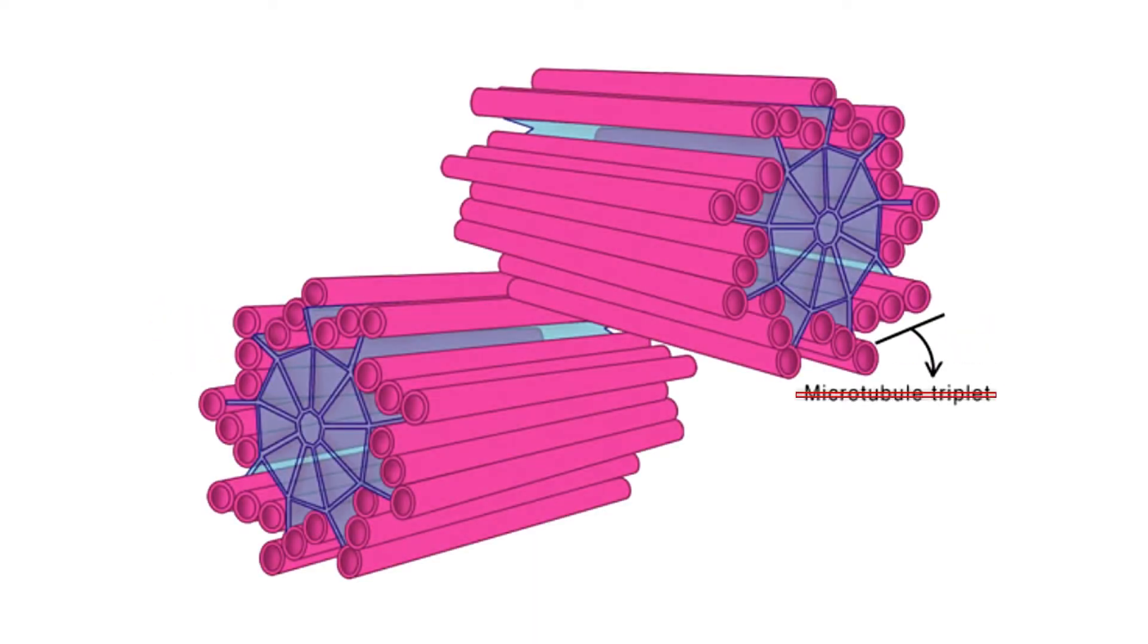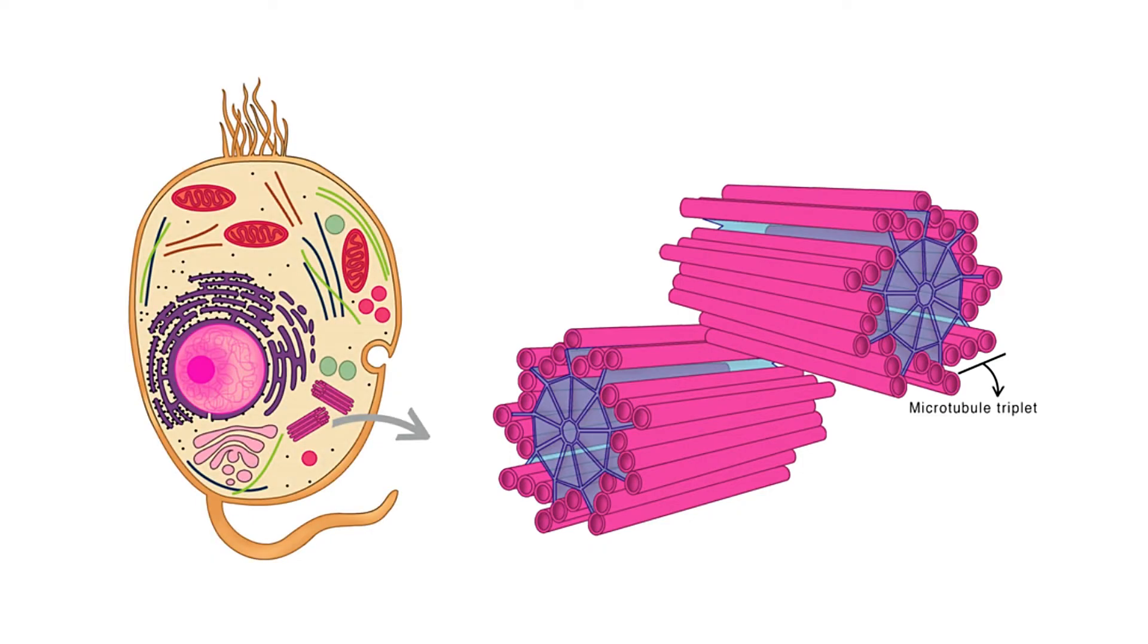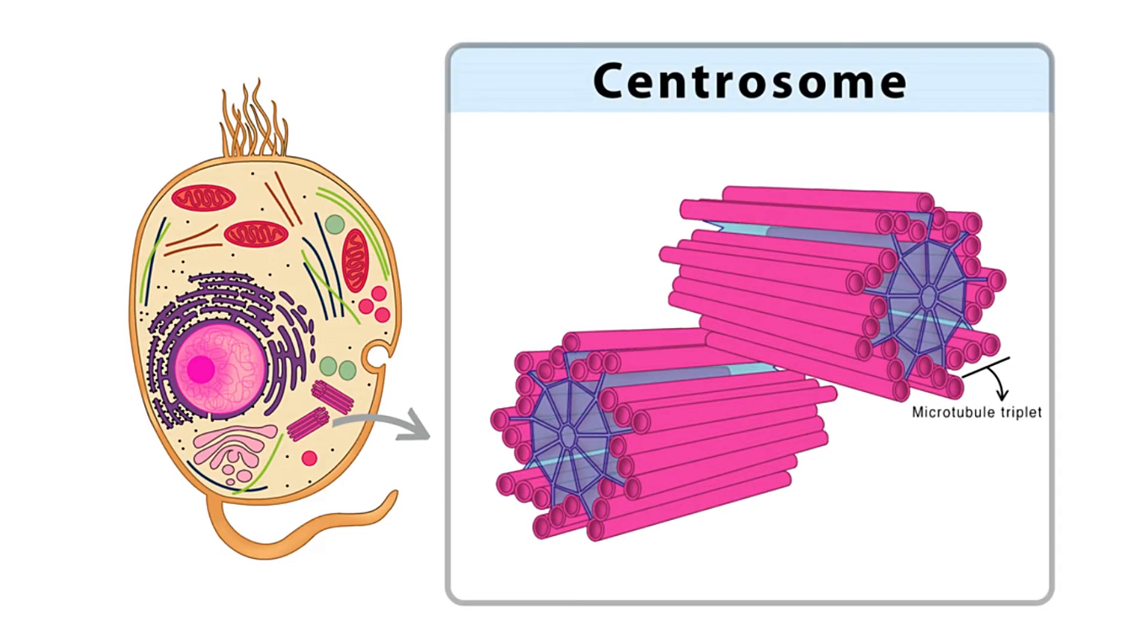Structure of Centrioles. Centrioles are cylindrical, microtubule-based structures found in animal cells. They are usually present in pairs, nestled near the nucleus within a region called the centrosome.